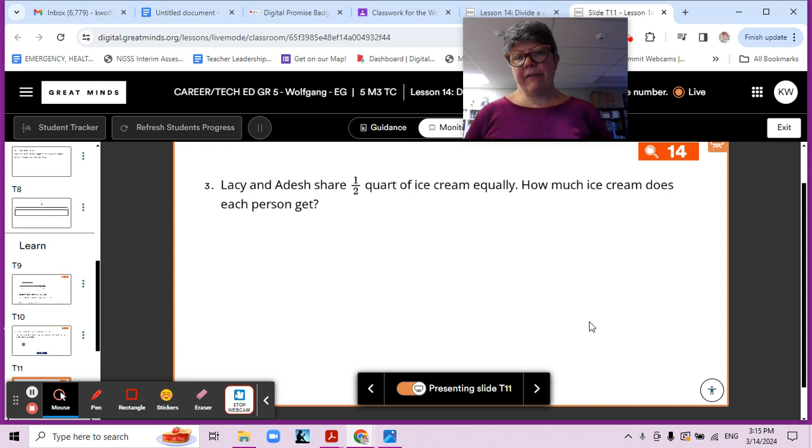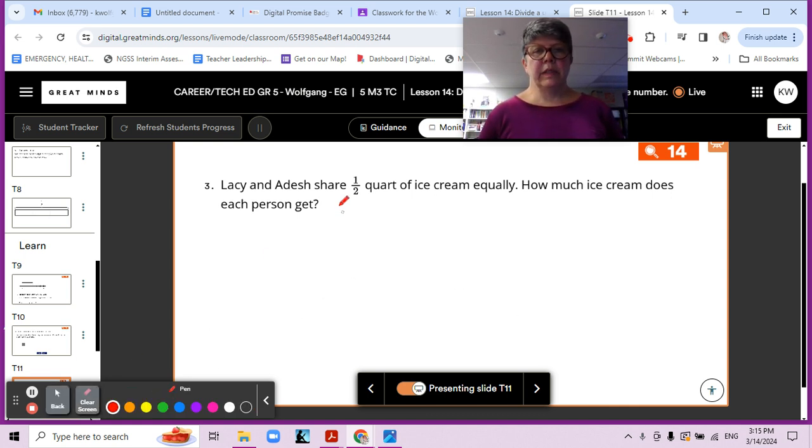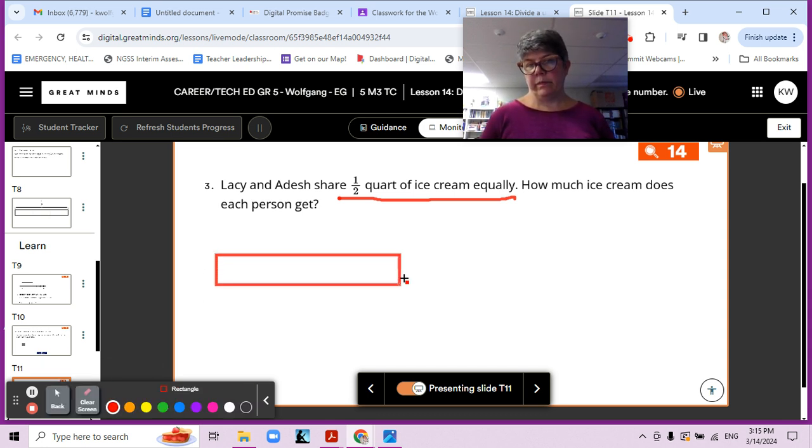Okay, they're sharing a half quart of ice cream. And they're cutting it in half. And we're wondering how much ice cream each person will get. So, can we draw something? Let's see. Let's draw our half quart. I'm just going to draw my line up there to the words. Half quart of ice cream.